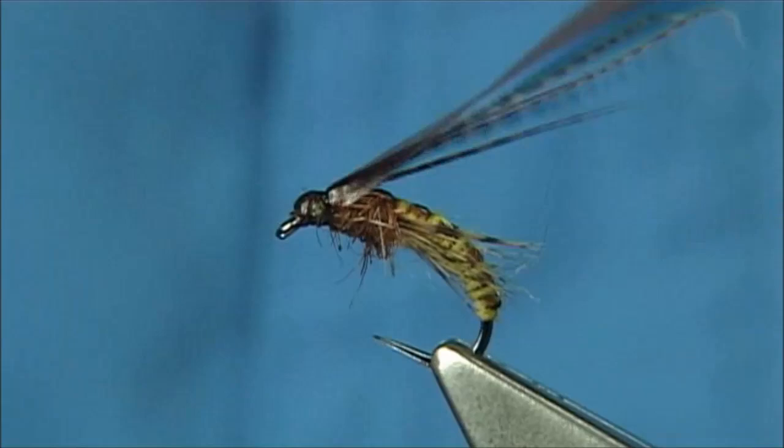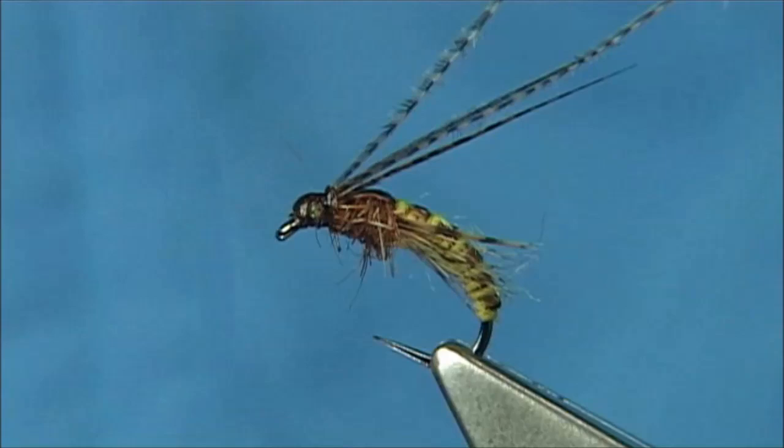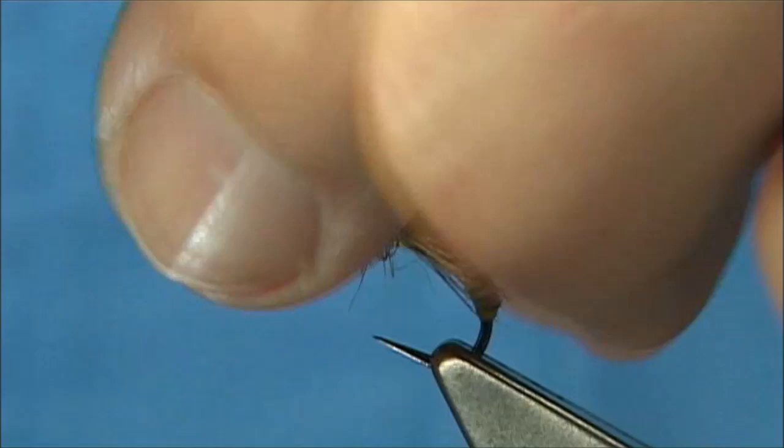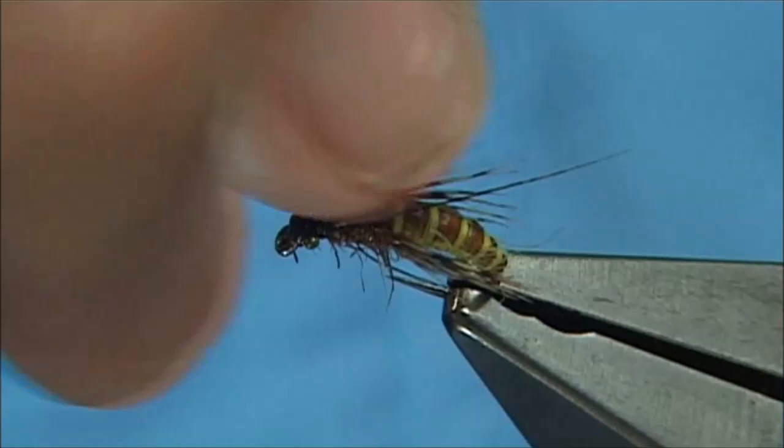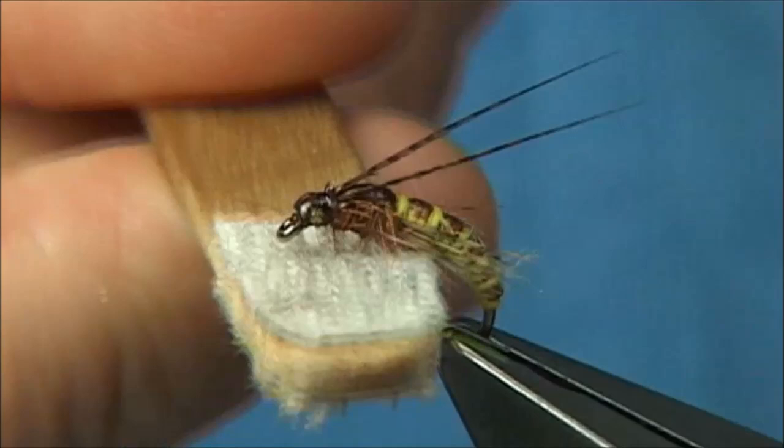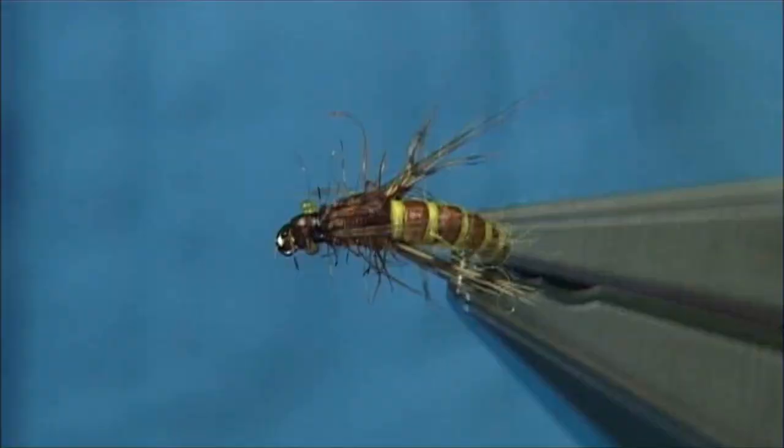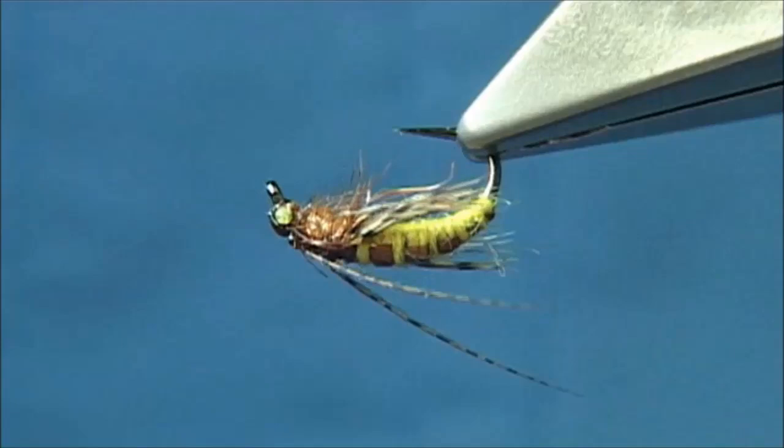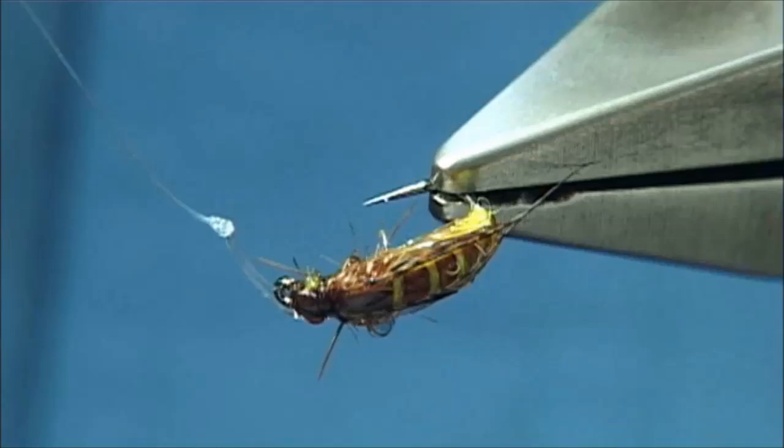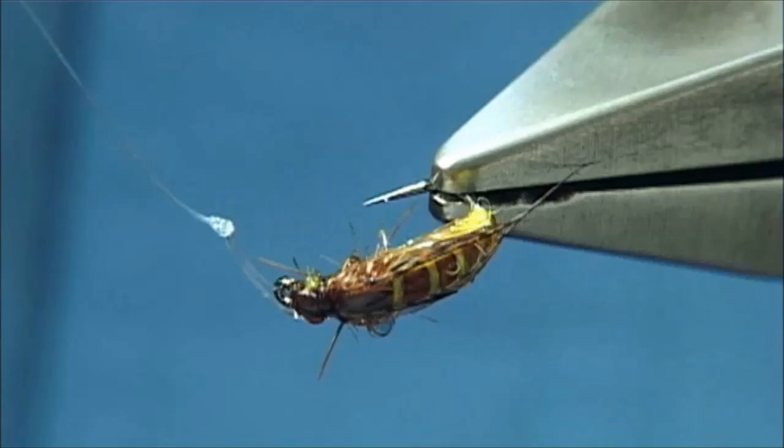Trim away the scud back. Just come in, doesn't have to be perfect, up tight against it. You can leave a wee bit. Get your waste bronze mallard and just watch, don't cut your horns. Trim them away. And there we are. And then to get some more legs out of it, get some velcro to bring out some of the seal's fur.